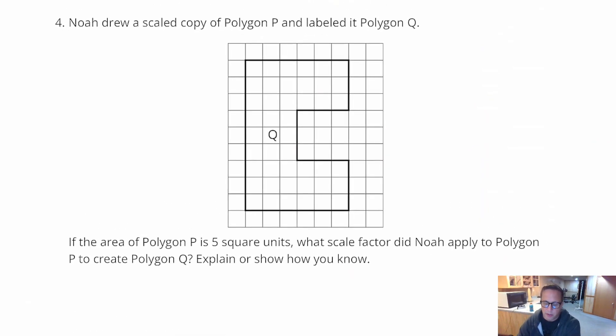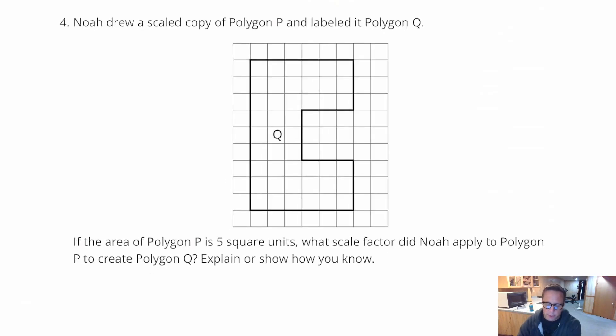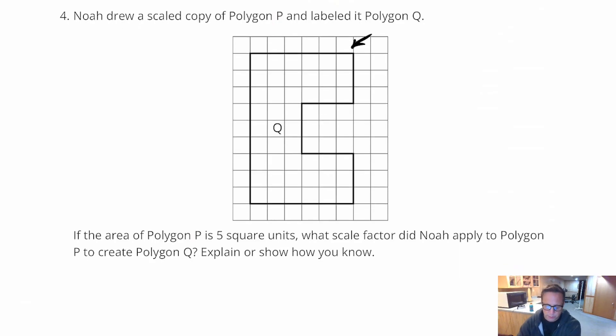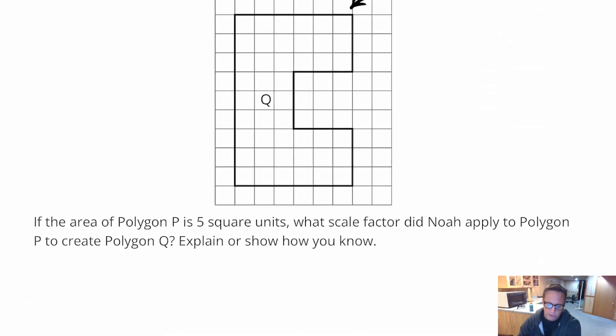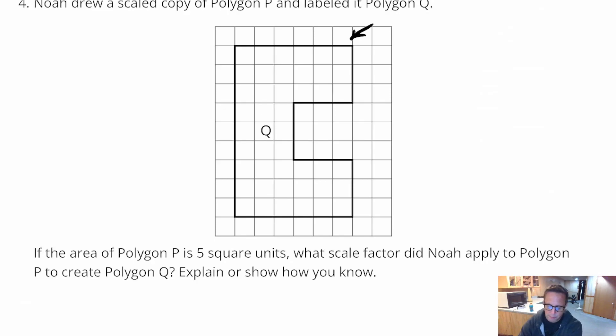For number 4, Noah drew a scaled copy of Polygon P and labeled it Polygon Q. So this is our scaled version. That's the scaled copy, and it's a new polygon. We don't have a picture of Polygon P. All we have is a picture of Polygon Q. Following along here, it says, if the area of Polygon P is 5 square units, what scale factor did Noah apply to Polygon P to create Polygon Q? This is not to scale, but Polygon P, that area equals 5 square units.